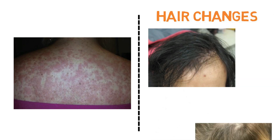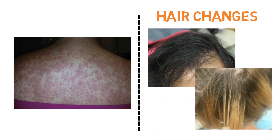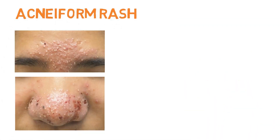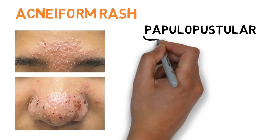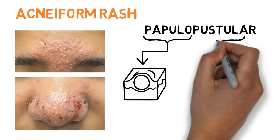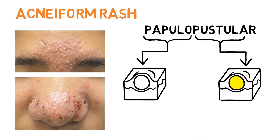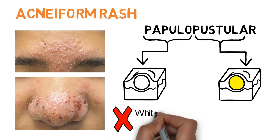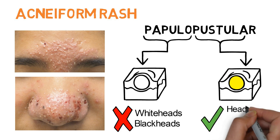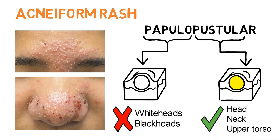An acneiform rash is papulopustular. This means that there are raised red bumps called papules, as well as lesions containing white or yellow pus called pustules. While the rash looks very similar to typical acne, there are no white heads or black heads, known as comedones. The head, neck, and upper torso are more commonly affected, usually in a symmetrical distribution.